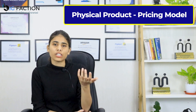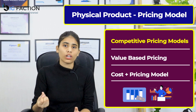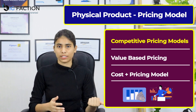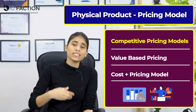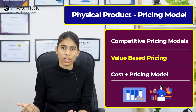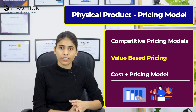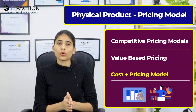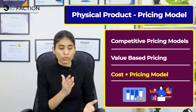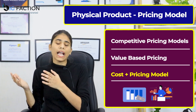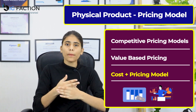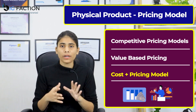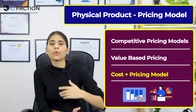The first industry we have is the physical product industry. Here you can generally see three to four types. The first is the competitive pricing model — we discussed this in detail in the previous video, so you can watch that for more detail. Second, you can use the value-based pricing model. Third, for physical products or manufacturing, there is cost-plus pricing, where you add your profit margin on top of the manufacturing cost. Generally, for any physical product — from a pen to a mouse — this pricing model is very commonly used.